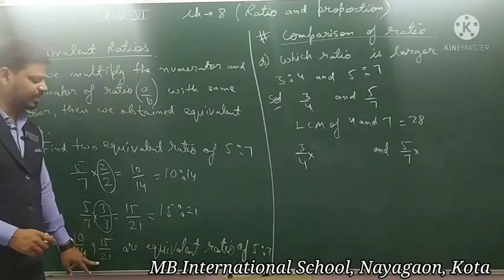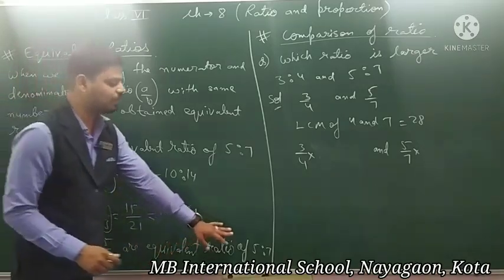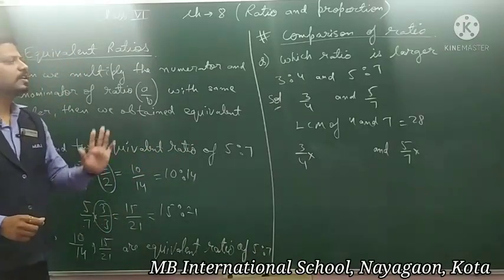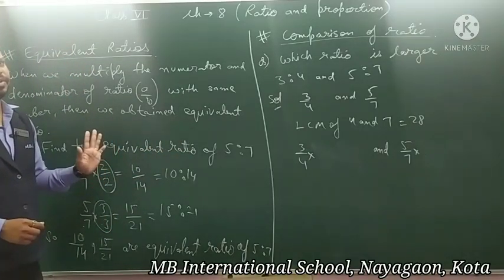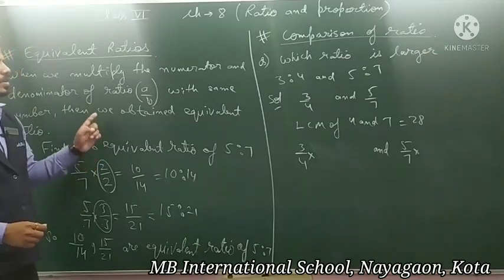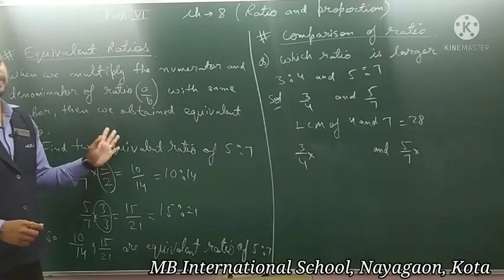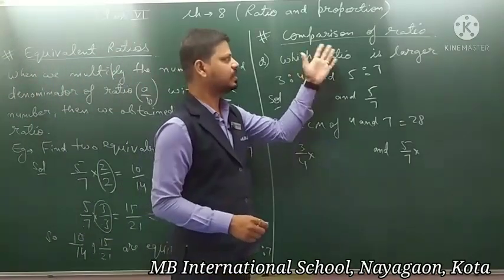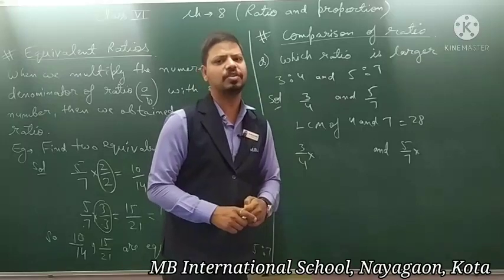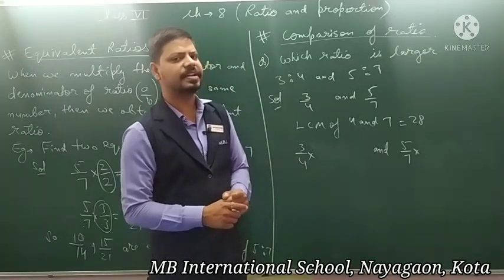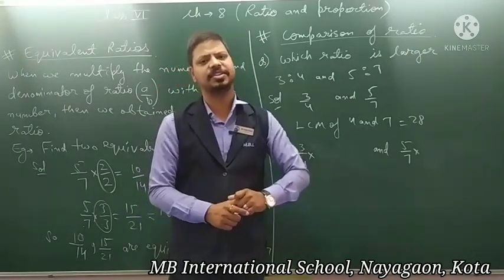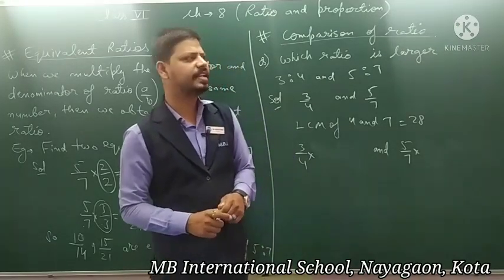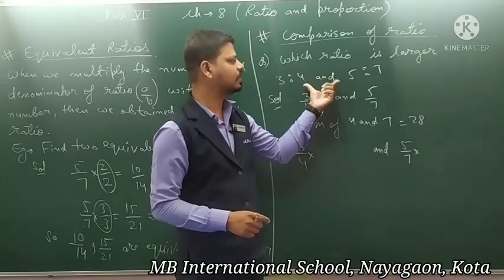So we have found two equivalent ratios of 5 ratio 7: that is 10 ratio 14 and 15 ratio 21. Yeh 2 equivalent ratios nikaalne the 5 ratio 7 ke. Yeh simple sa concept hai — jab bhi aapko equivalent ratio nikalne ke liye bolenge, aap us ratio ke numerator aur denominator ko same number se multiply kar denge. Now after that, comparison of ratio — aapko ratios ko compare karna hai, compare karke aapko yeh batana hai which ratio is greater or which ratio is smaller.